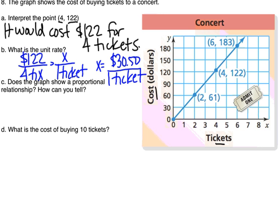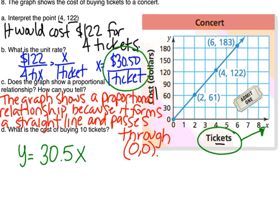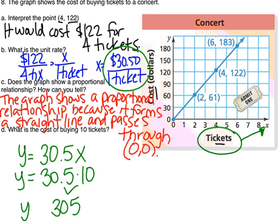For part C, does the graph show a proportional relationship? It does. We can tell because it's a straight line and it passes through the origin. The graph shows a proportional relationship because it forms a straight line and passes through the point 0,0, which is the origin. Then on to part B, what is the cost of buying 10 tickets? We can use our unit rate and set up an equation: y equals $30.50 multiplied by x. X was the number of tickets, so I'm going to substitute in 10 in place of x. When we multiply $30.50 by 10, we get $305. So y equals $305, which is the cost of buying 10 tickets.